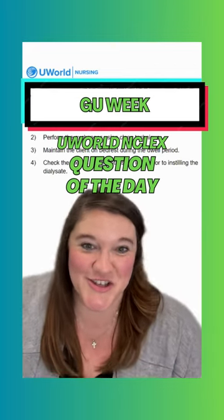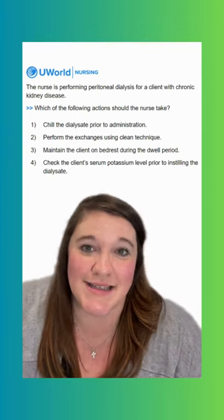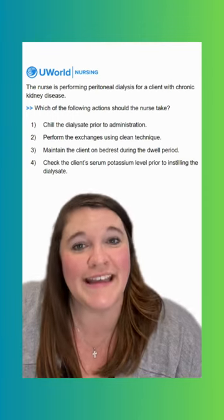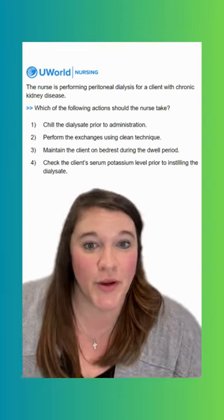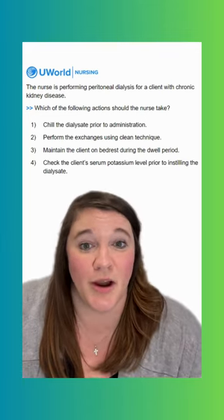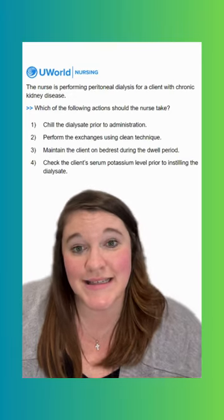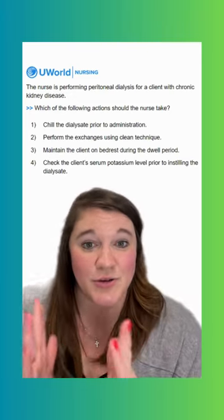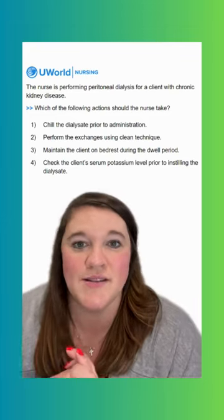Welcome back for another GU NCLEX question of the day. The question says the nurse is performing peritoneal dialysis for a client with chronic kidney disease — which of the following actions should the nurse take? With peritoneal dialysis, we instill dialysate into the peritoneal cavity, let it dwell for a prescribed period of time, and then we drain it.